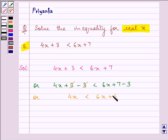That is after simplification. Now, on subtracting 6x from both the sides, we have 4x minus 6x is less than 6x plus 4 minus 6x. We have on simplification minus 2x is less than 4.